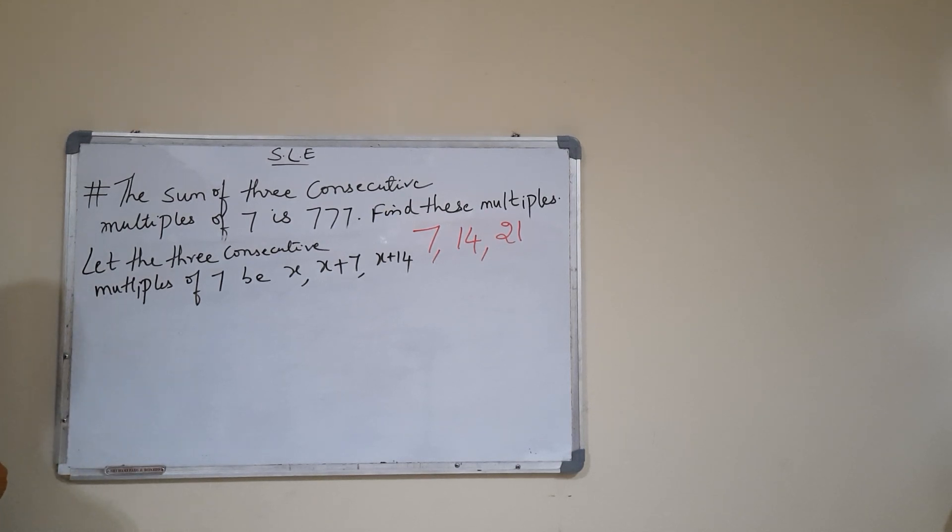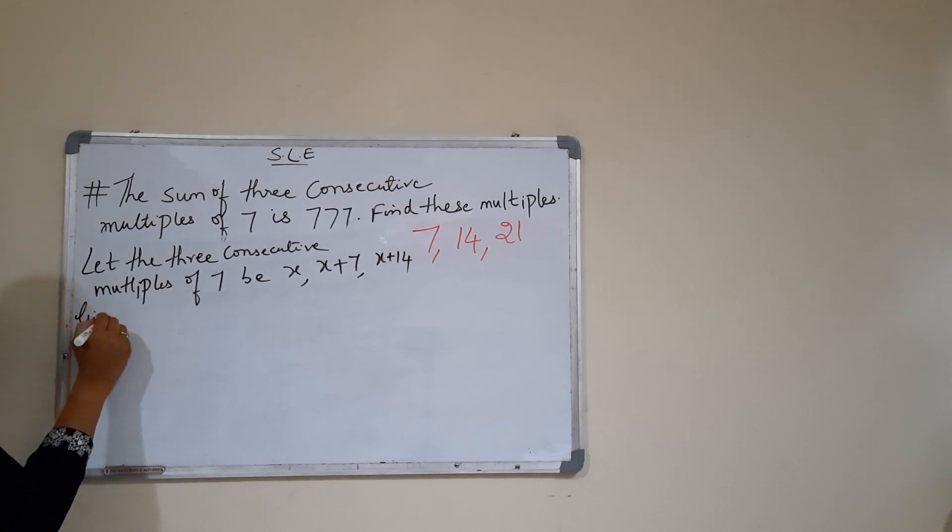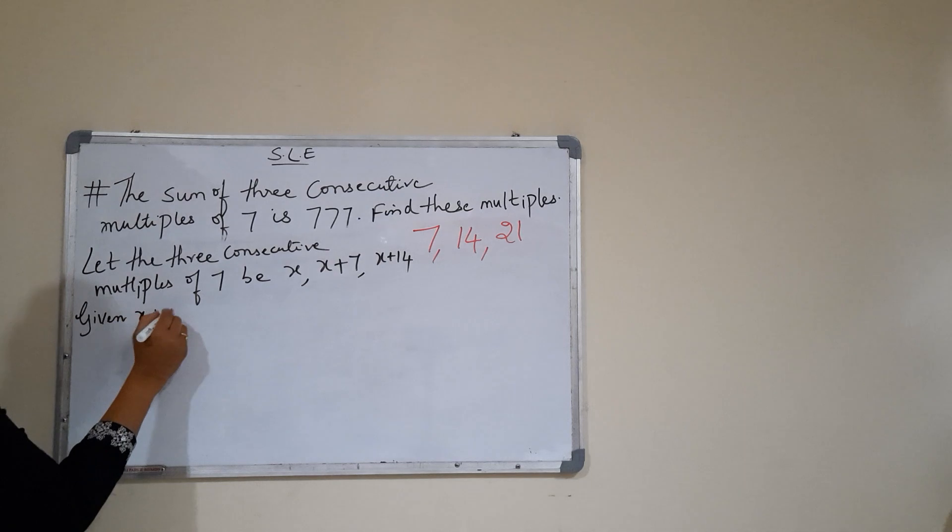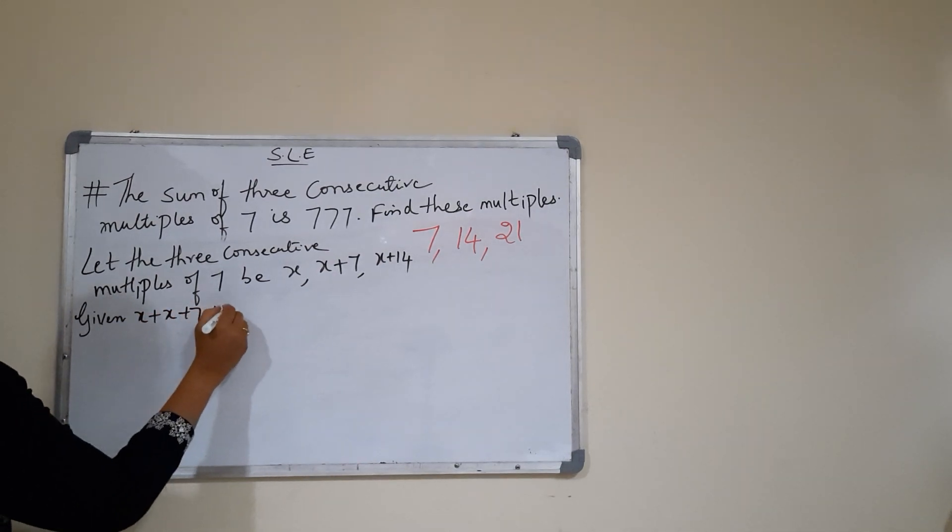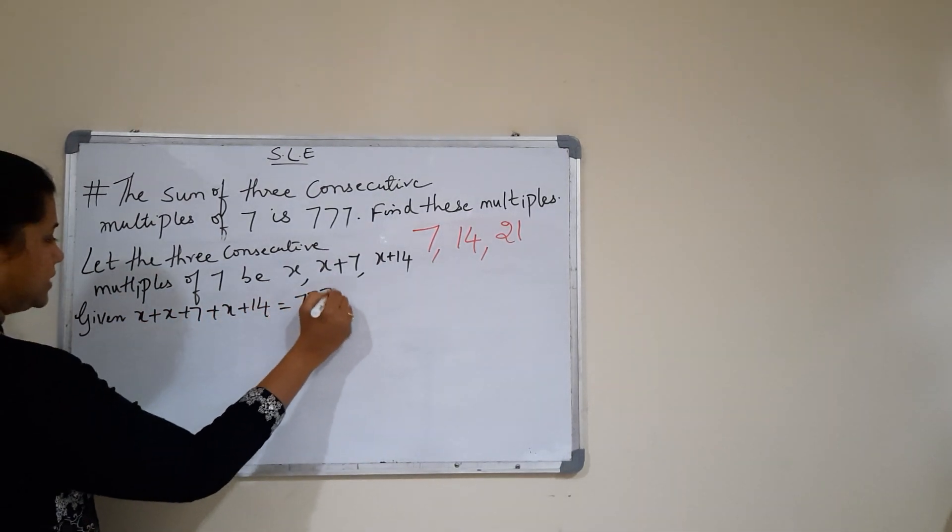Now given that the sum of these three consecutive multiples is triple 7, we have x plus x plus 7 plus x plus 14 is equal to 777.